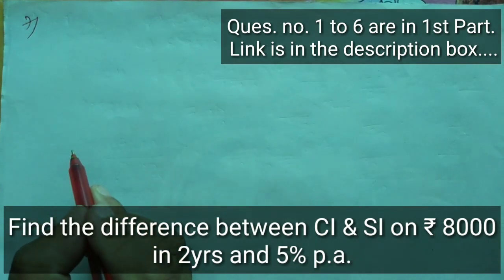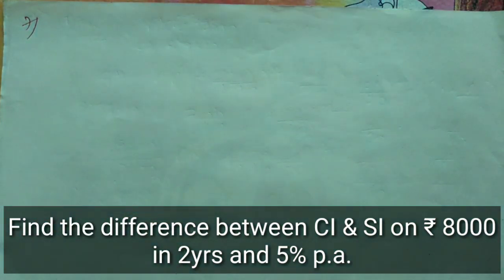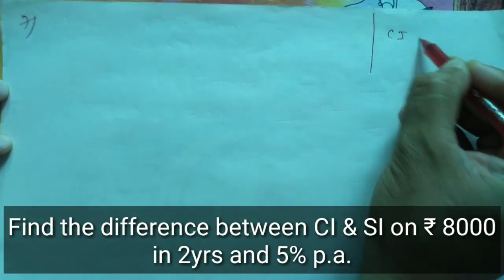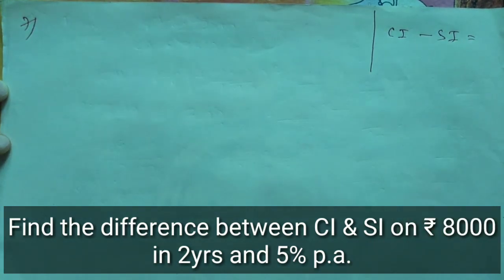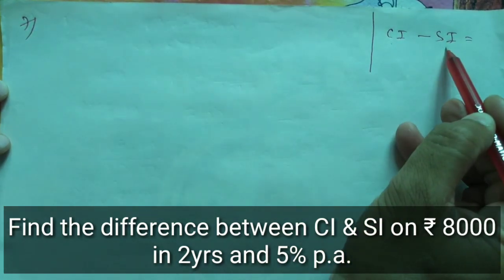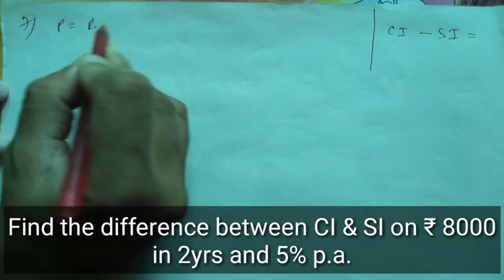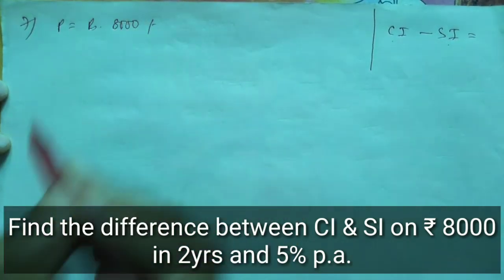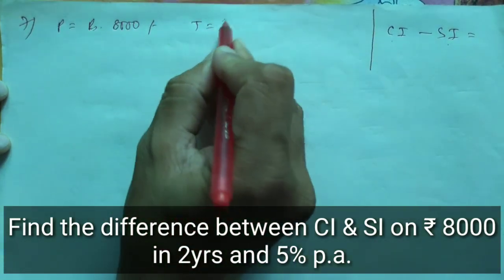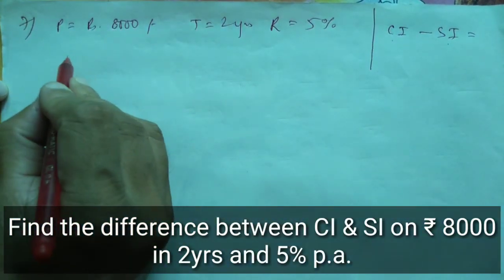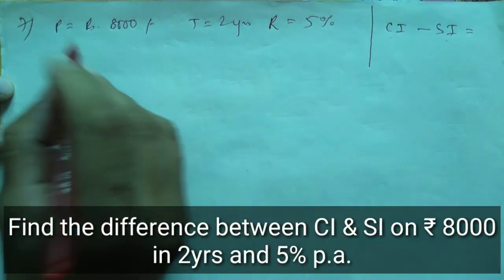Question number 7: Find the difference between compound interest and simple interest on Rs 8,000 in 2 years at 5%. We have to find compound interest minus simple interest. So we need to find compound interest first, then simple interest, then subtract them. Principal equals Rs 8,000, time is 2 years, rate is 5%. First, let us find compound amount.